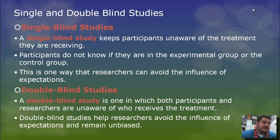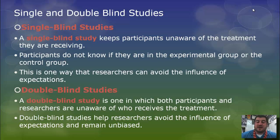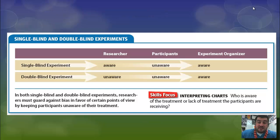But if the researcher knows that the participant is receiving the treatment, then they can still have bias. A double blind study is required of any drug or anything going on the market by the FDA. In a double blind study, both the participants and researchers are unaware of who is getting the treatment — only the experiment organizer knows who is who. One person has a list of who is who. Double blind studies help avoid the influence of bias and expectations.